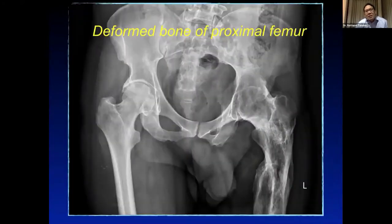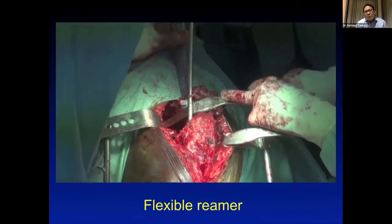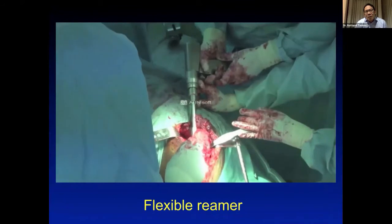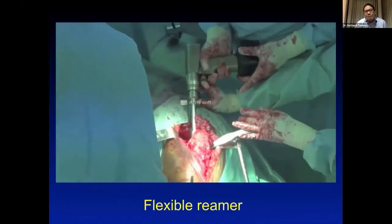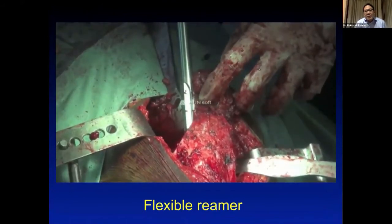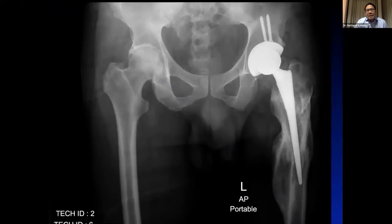For patients with ankylosed bone — as is common in neglected cases — a flexible reamer is used to develop the femoral canal, followed by insertion of a small taper stem. Fluoroscopy is very helpful to identify the femoral canal in these cases. A synergy stem was used in one such example.